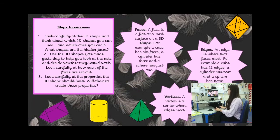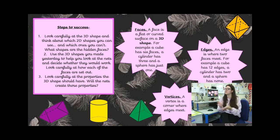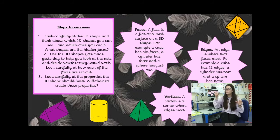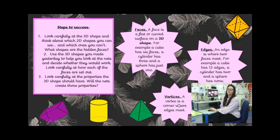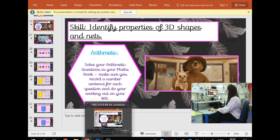Our steps to success today: look carefully at the 3D shape and think about which 2D shapes you can see — and which you can't, because when we draw 3D shapes there are always hidden faces. Use the 3D shapes you made yesterday to help. Look at the nets and decide whether they would or wouldn't work. Check: are they the correct shapes, are they positioned so they'd fold, and have you got enough faces? Look at the properties of the 3D shape — will the net create those properties?